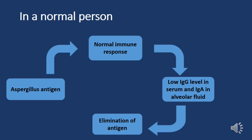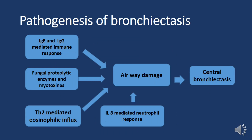In healthy individuals, even upon inhalation of a substantial quantity of allergens, the immune system mounts a robust response to eliminate the fungus. This is evident through low levels of IgG in the serum and low IgA in the bronchoalveolar fluid, suggesting the immune system efficiently controls allergens in the airways, preventing allergic reactions such as ABPA.